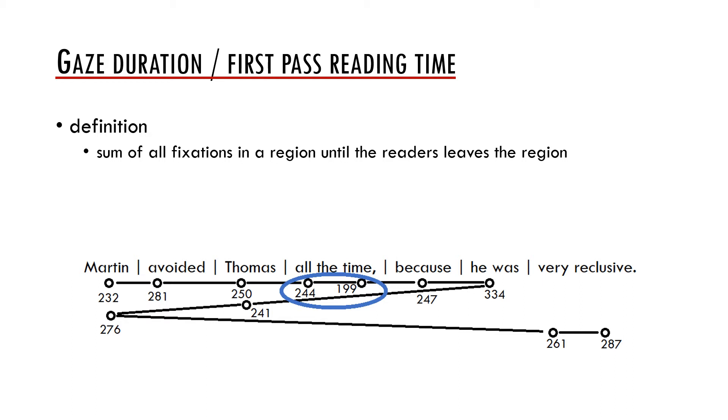You may see that it can be quite similar to the first fixation duration. In fact, the only region where first fixation duration and first pass reading time differs in this example is the region all the time. For regions Martin avoided Thomas because he was very and reclusive, these measures are identical. Therefore, this measure is typically more informative in case of longer regions, for example in discourse analysis.